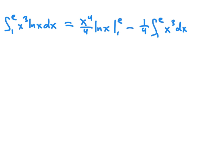So now we just have to evaluate the two expressions on the right-hand side. Our first expression, we're going to substitute e into the formula x to the 4th over 4 natural log x to get e to the 4th over 4 natural log of e, which is 1, minus 1 to the 4th over 4, which is 1 4th, times natural log of 1, which is 0.